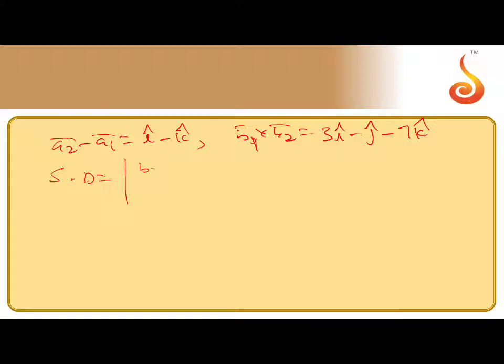So now what are we going to do? (b̄₁ × b̄₂) · (ā₂ - ā₁) divided by |b̄₁ × b̄₂|. Now you can take the dot product between these two.